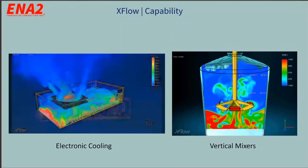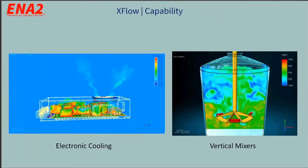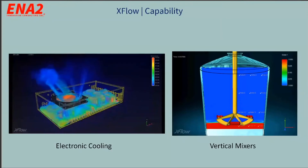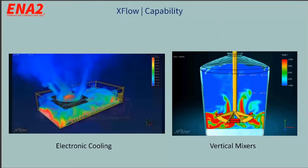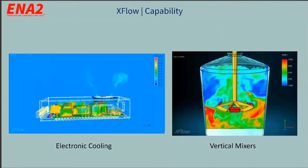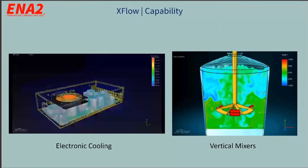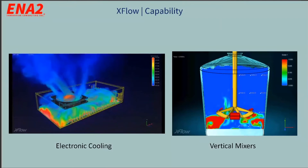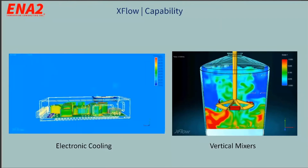Additional XFlow examples include electronic cooling, showing a conjugate heat transfer problem — convection and conduction — with a moving fan. There is also an example showing XFlow's capability for mass transfer analysis, where two fluid materials interact with each other.